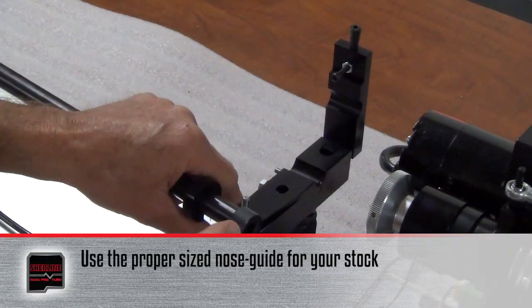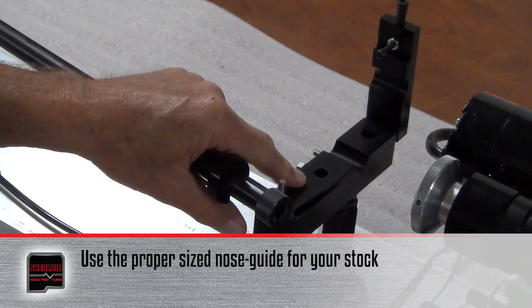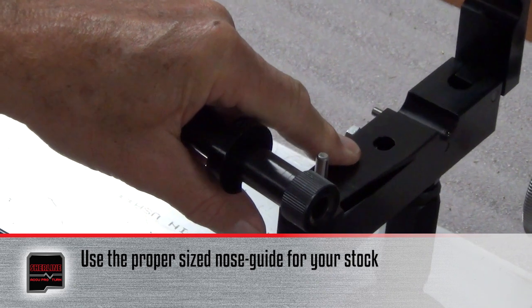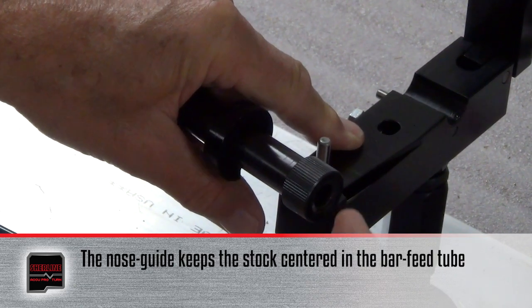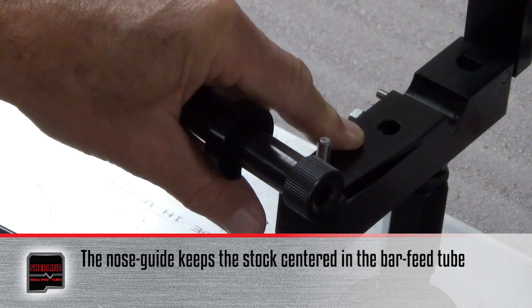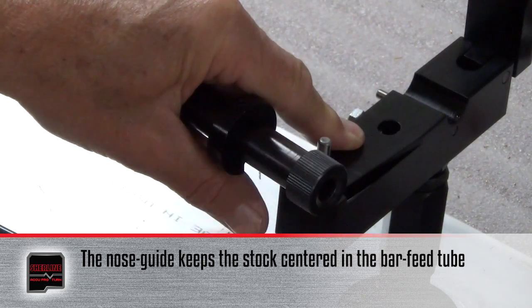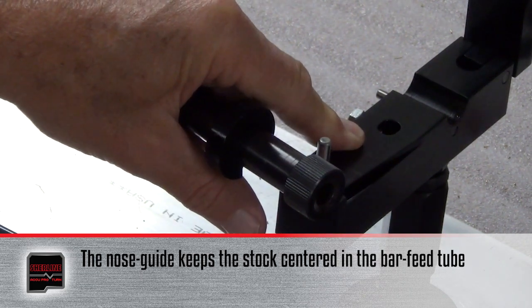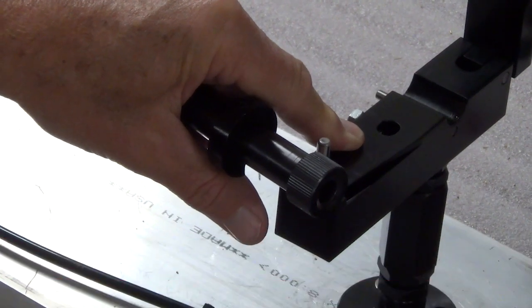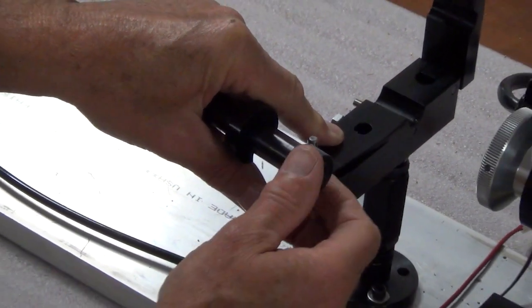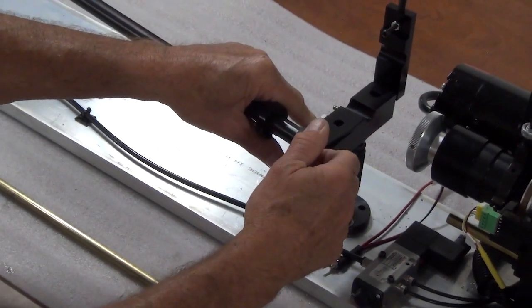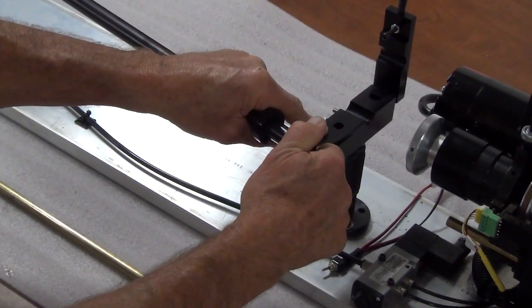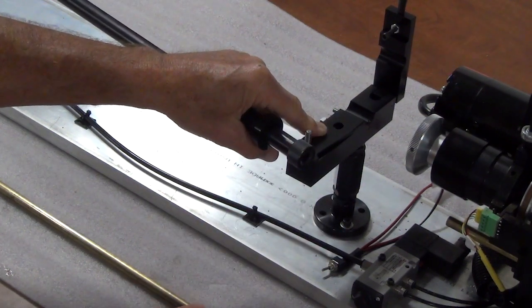We have several different size nose guides. You pick out the proper size nose guide for the stock that you have and this keeps the stock centered inside the bar feed tube. We've already put a seven sixteenths inch because that's the size of the stock that we're running. So that's already in there and then you just tighten down the bar feeder nose onto it. It just has to be hand tight. It doesn't have to be really super tight.